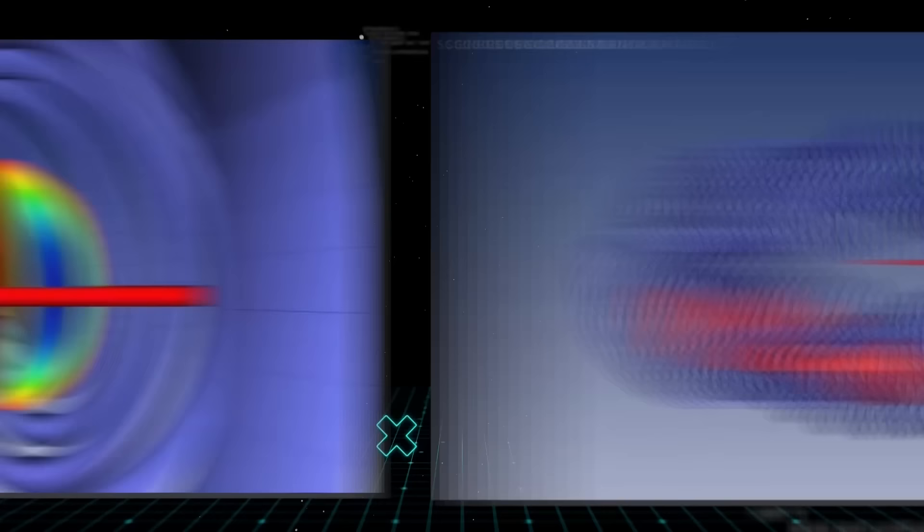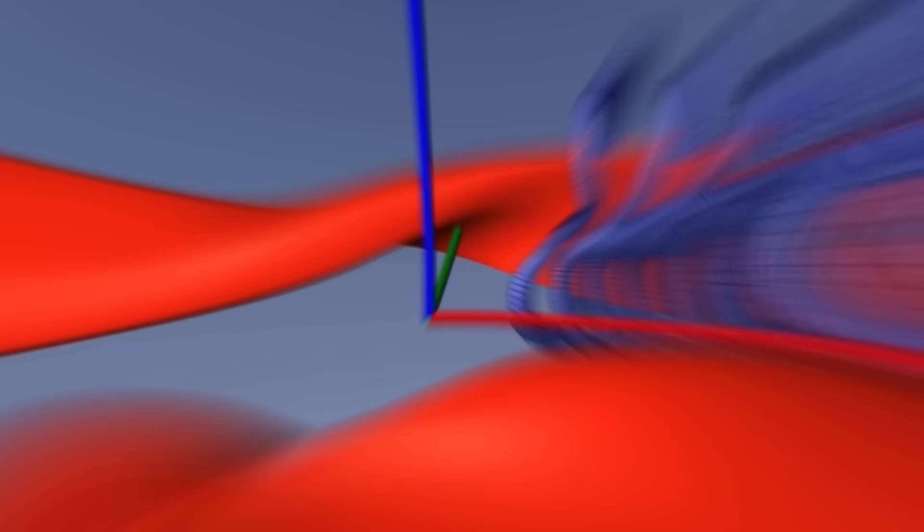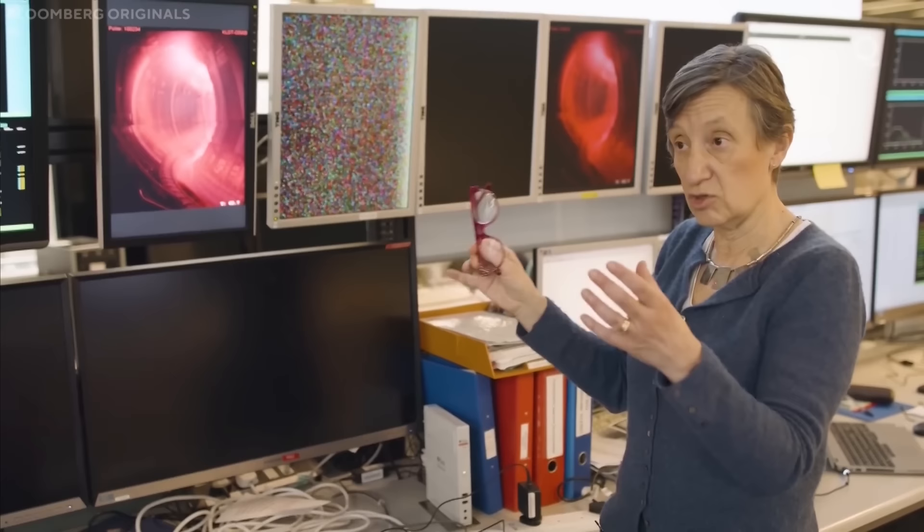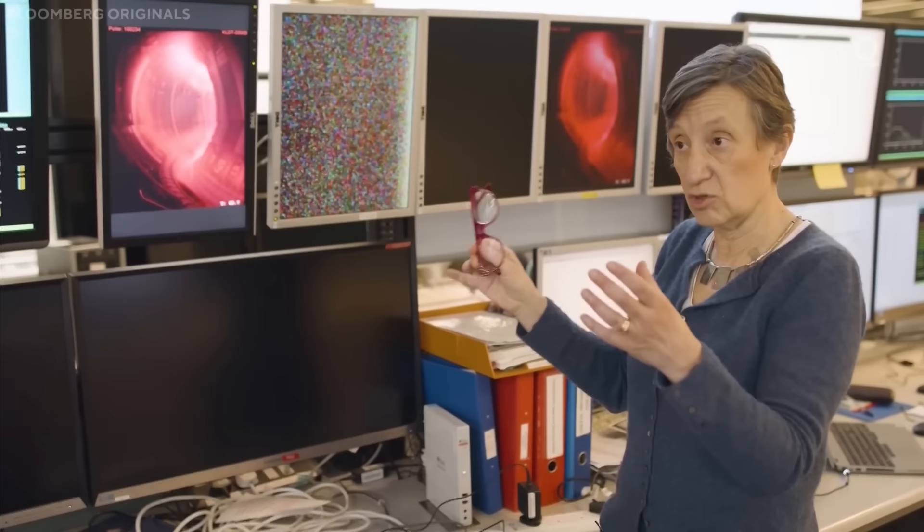Quasi-symmetry means that the magnetic field strength is approximately constant along the field lines, which reduces the drift of the plasma particles across the magnetic surfaces. Quasi-symmetry can be achieved by carefully designing the shape and twist of the magnetic coils, using sophisticated optimization algorithms and supercomputers.